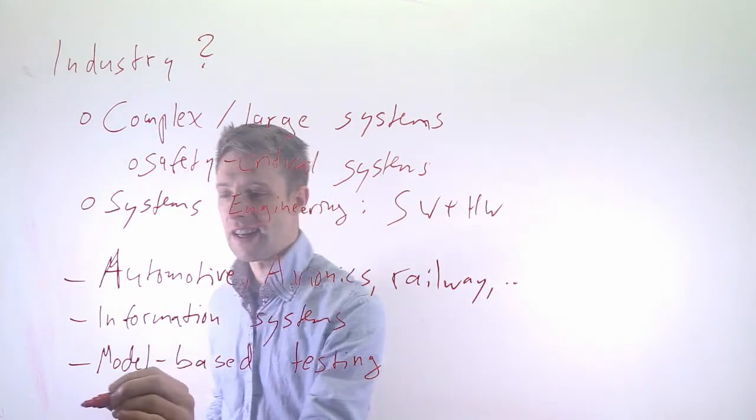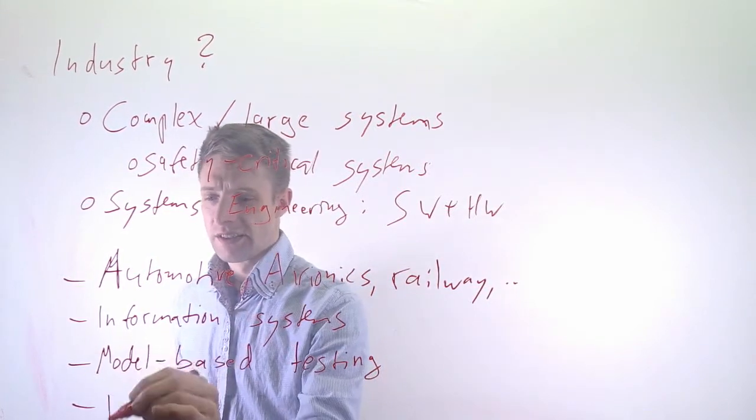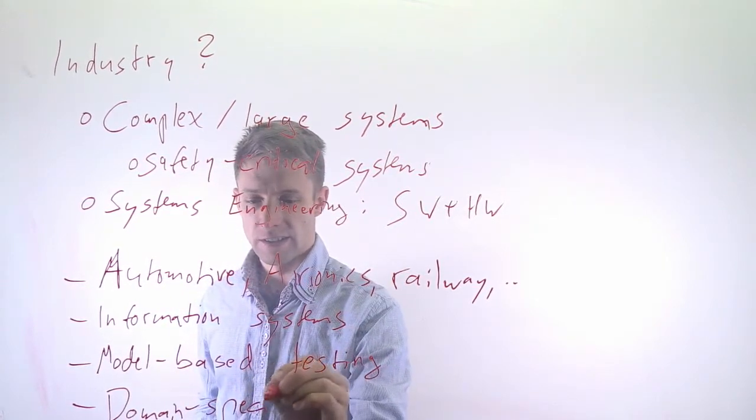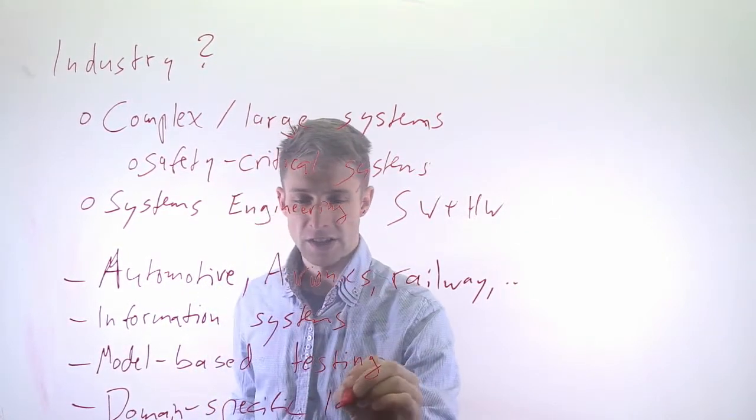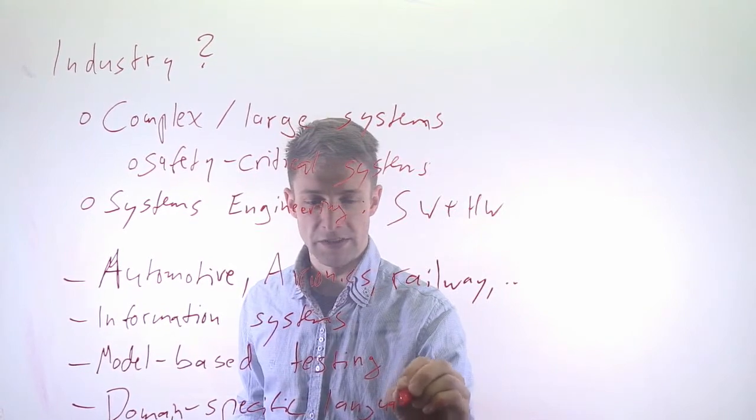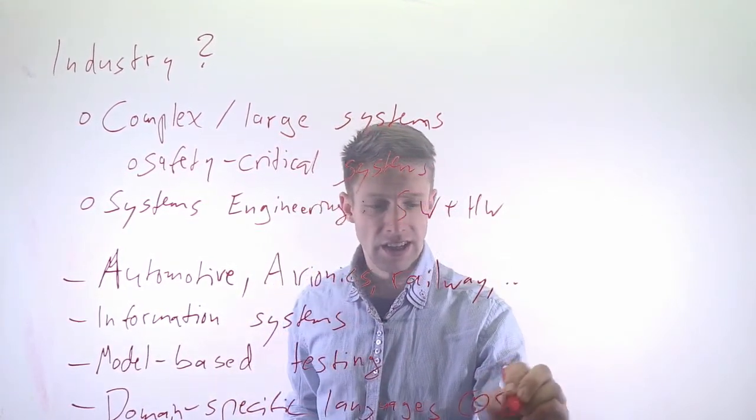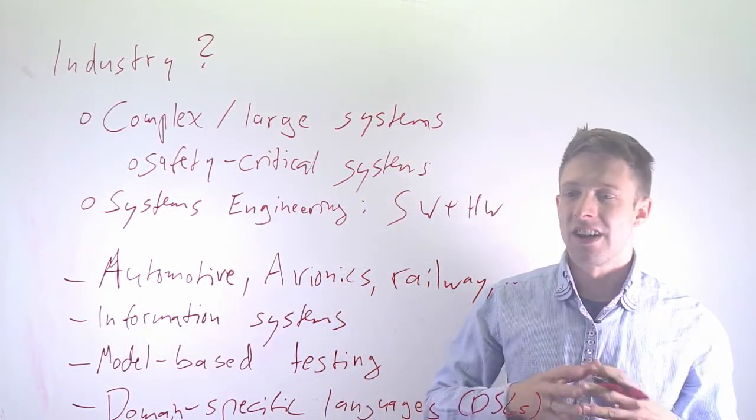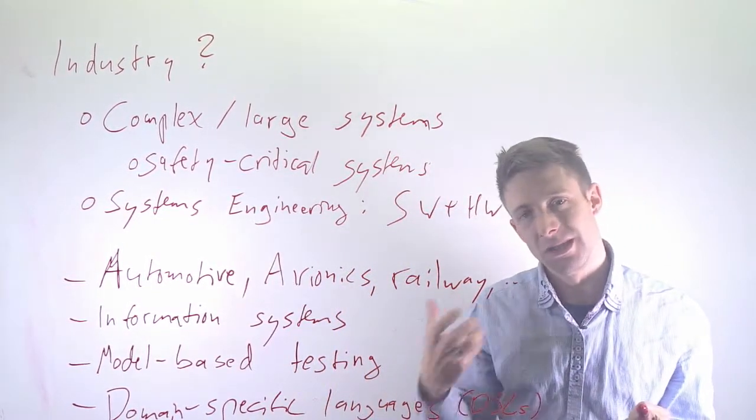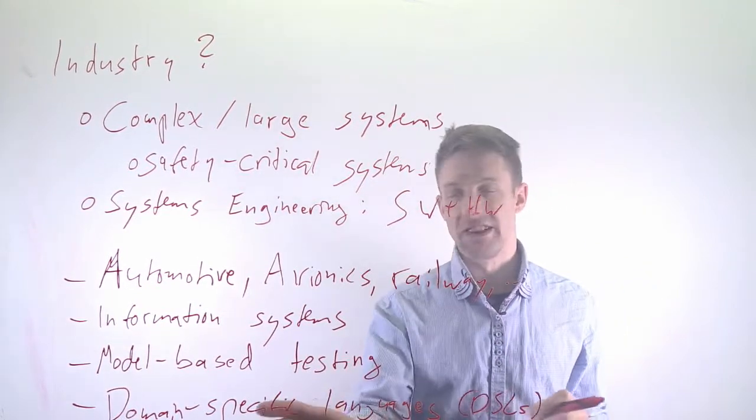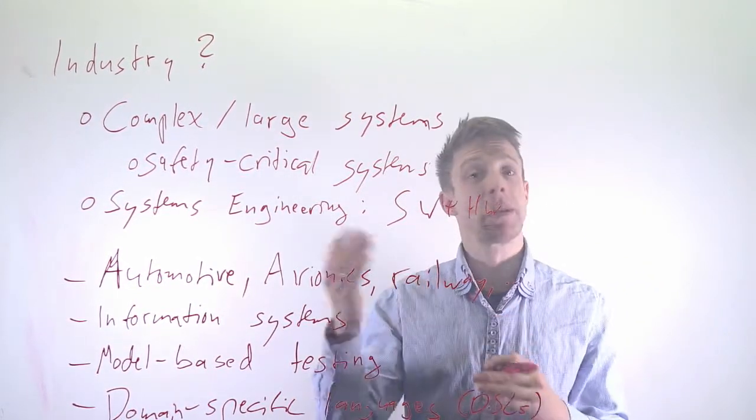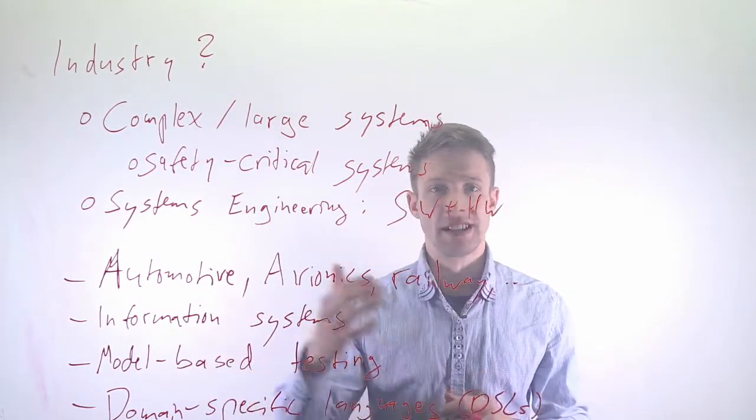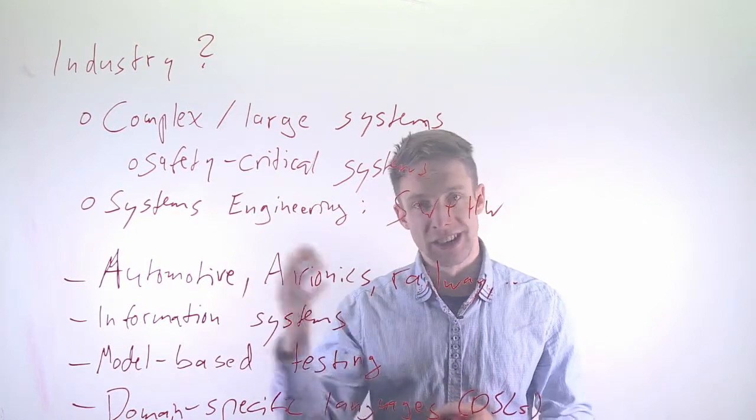And then finally, something that has to do with the first part of my answer, we have something that is called domain-specific languages or DSLs. And those are essentially languages that are specific, that are tailored to a certain use case. For example, you might have a textual language that looks a bit like programming, but it's made specifically for a mechanical engineer to express his or her mechanical components.